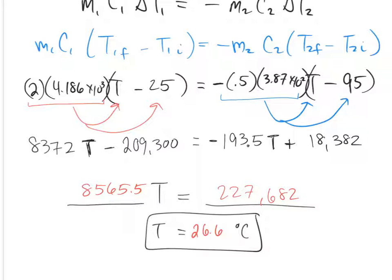That's why the ocean doesn't warm up very quickly — water has a very high C value, making it hard to gain heat, and it also has a lot of mass. Your pool heats up pretty quickly in summer, but the ocean takes a long time because there's a lot more mass and water has a relatively high specific heat capacity.